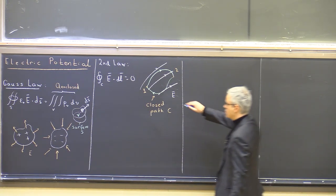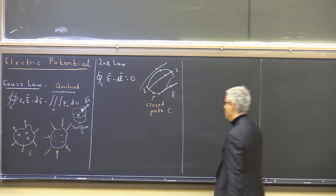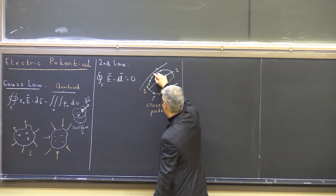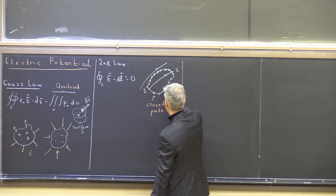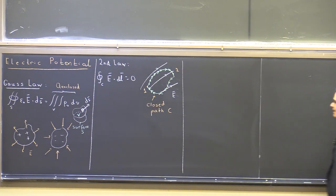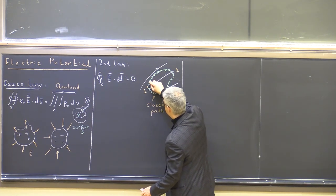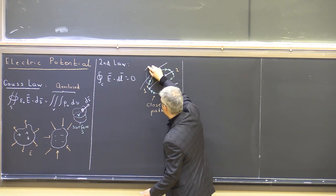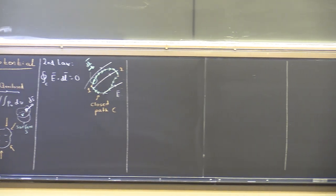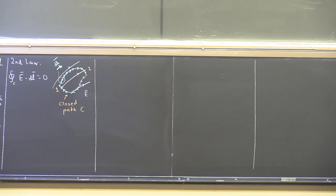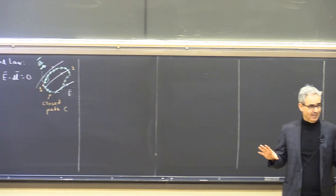dl is the differential length element that you can find on the aid sheet for different coordinate systems. You imagine that you split the path into differentially small segments dl, and at every segment you take the dot product between the electric field and dl. Each one of these little arrows represents a dl locally along this path. We will see examples to understand better what this dl may be.